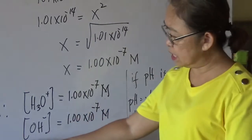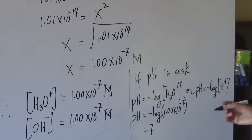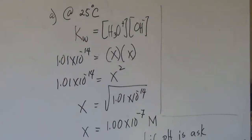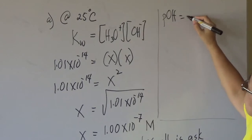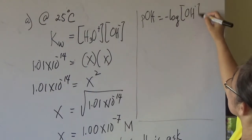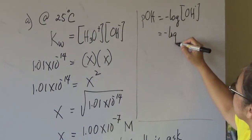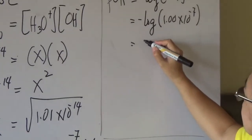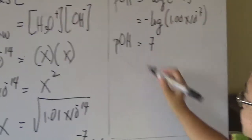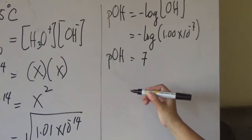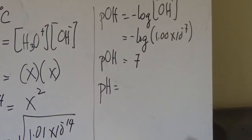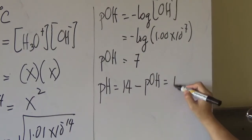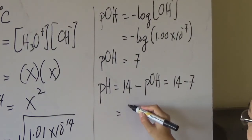If you are going to use the OH concentration, you will solve for pOH. pOH equals negative log of the concentration of the hydroxyl ion, which is negative log of 1.0 times 10 to the negative 7, so pOH equals 7. Since pH is asked, you know that pH plus pOH equals 14, so pH equals 14 minus 7, therefore pH is 7.